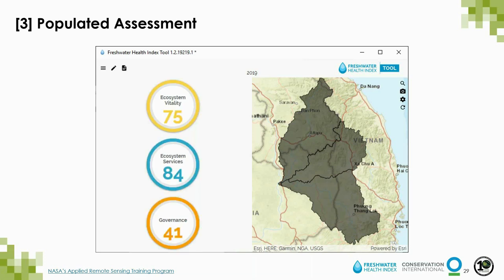A more populated assessment looks something like this, with scores now visible for each component and color coded. If descriptions have been added to each indicator, hovering over the score leads to a pop-up displaying the metadata. The tool stores any information entered into it in a shareable database format — a file with the extension .FHIX. For example, if I calculated only a single indicator, I can save that as a .FHIX file and share it with a colleague to edit data or add other indicators. On loading a previously saved .FHIX file, the indicator and associated data load into the tool. With this general orientation, we can attempt to calculate a few indicators using the tool.